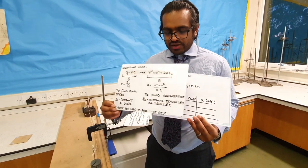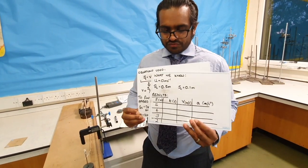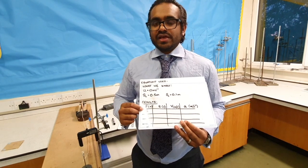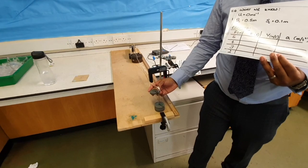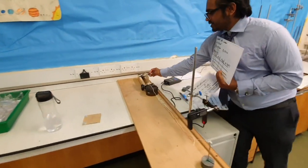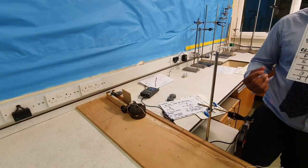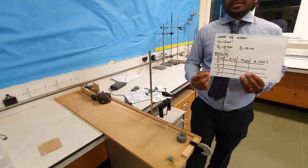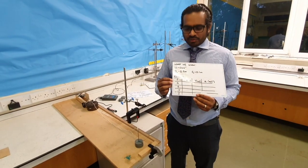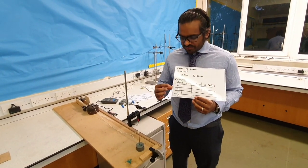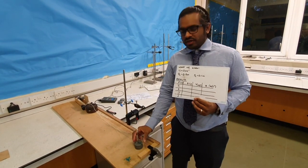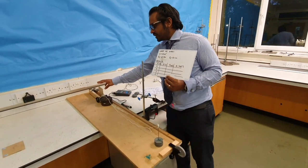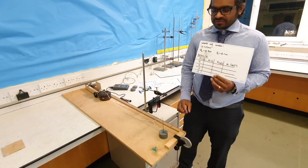Once we have found our acceleration for our first force, which is 5 newtons, we are going to remove one of the masses and place it into the trolley. The reason why we're going to place it into the trolley is to ensure that the mass of the system remains constant. We have worked out our acceleration for 5 newtons. Now we're going to find out our acceleration for 4 newtons. We have removed one of the masses from the force and placed it onto the trolley to ensure that the mass of the system remains constant.